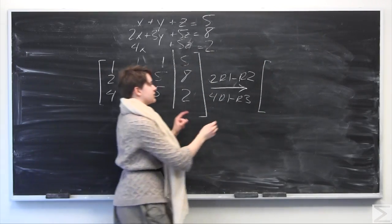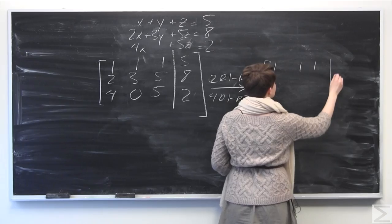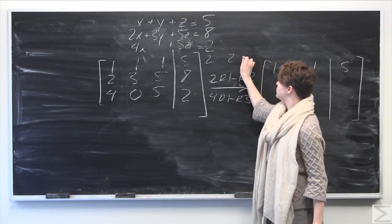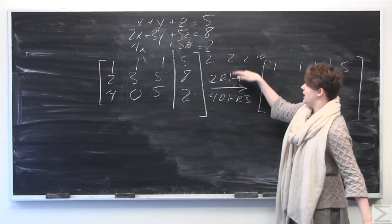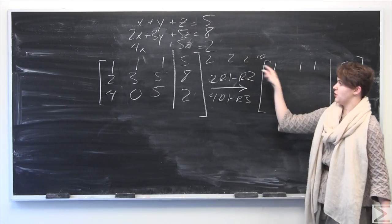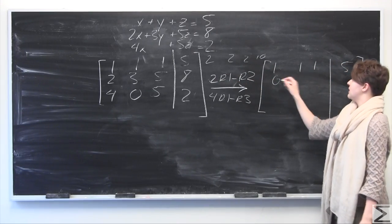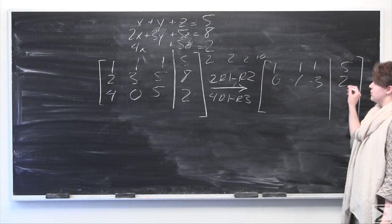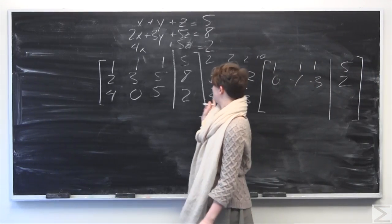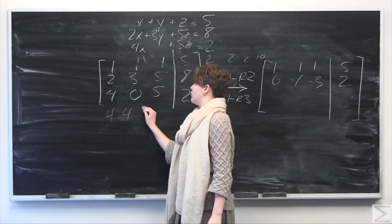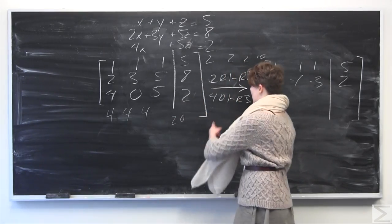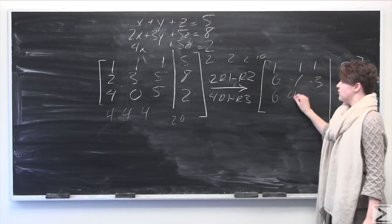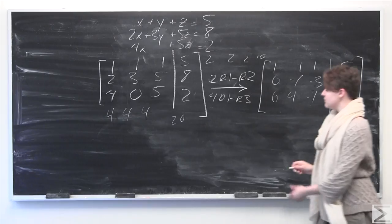Row one just stays the same: one, one, one, five. For the second row, two times the first row is two, two, two, ten. Subtracting the original second row: two minus two is zero, two minus three is negative one, two minus five is negative four, and ten minus eight is two. For the third row, four times row one is four, four, four, twenty. Subtracting row three: four minus four is zero, four minus zero is four, four minus five is negative one, and twenty minus two is eighteen.